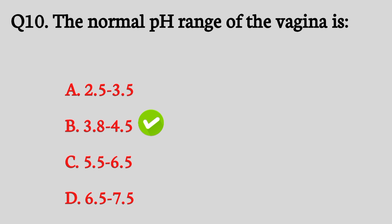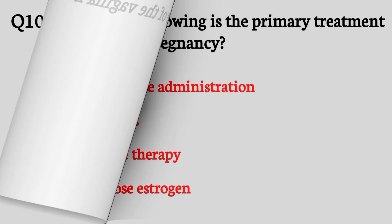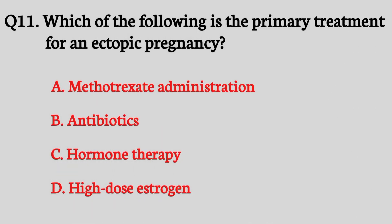Question number eleven. Which of the following is the primary treatment for an ectopic pregnancy? The right answer is option A: Methotrexate administration.